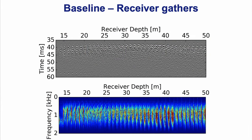We also look at receiver gathers — fixing the receiver and using many sources. We see the same characteristics as the shot gathers: clean first arrivals, and a lot of scattering, reflections, and diffractions. We are very happy to see this consistency between shot gathers and receiver gathers.